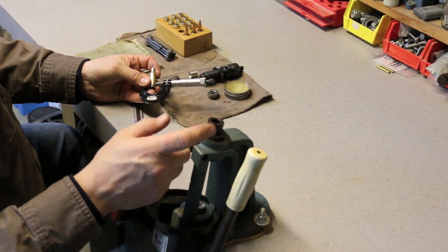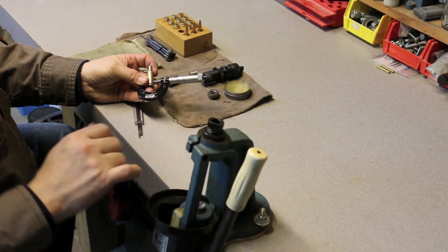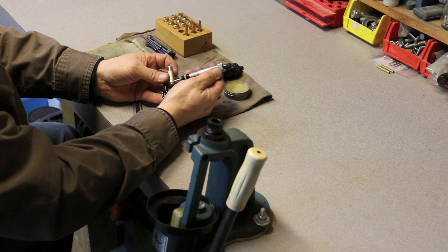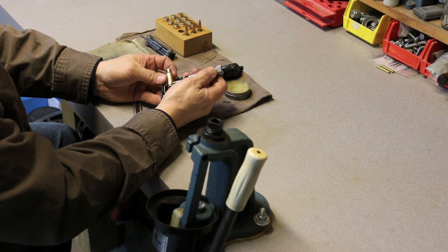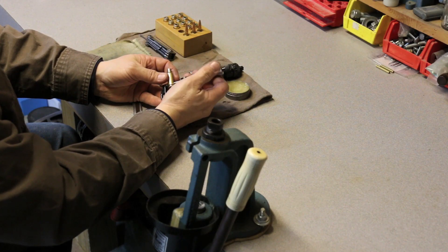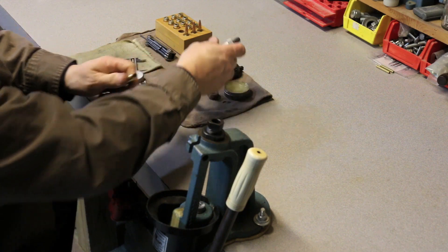What I've done is replaced the shoulder setback die or bump die with my ring die and my altered shell holder. What I'm going to do is measure this cartridge at the base, and I've got about .470, maybe just a hair under .470 at the base. We're going to change that.